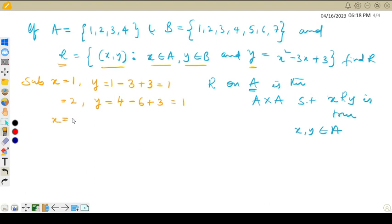Substitute x value is 3. y value is 3 times 3 is 9, again 3 into 3 is 9, plus 3. So the value is 9 minus 9 plus 3, which equals 3 only.